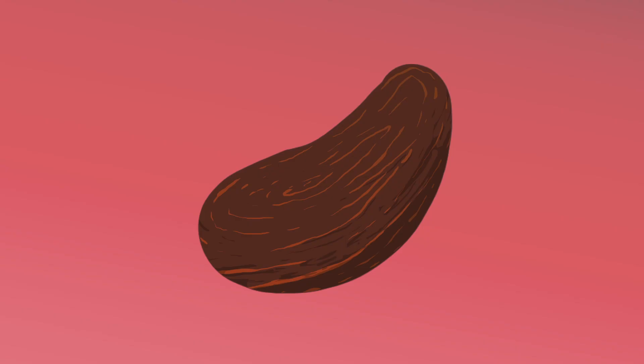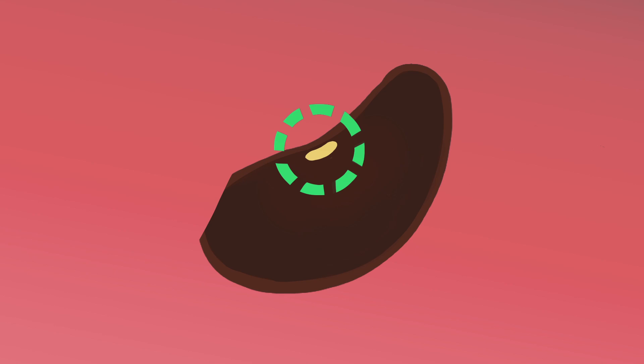One technique we can use is called nicking. To do this, we make a small cut or scratch into the seed coat. Be careful not to cut too deep. You don't want to damage the plant embryo inside.